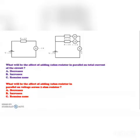What will be the effect of adding a one-ohm resistor in parallel on the total current of the circuit — decrease, increase, or remain constant? That is increase. What will be the effect on the voltage across the two-ohm resistor — decrease, increase, or remain constant? It remains constant.